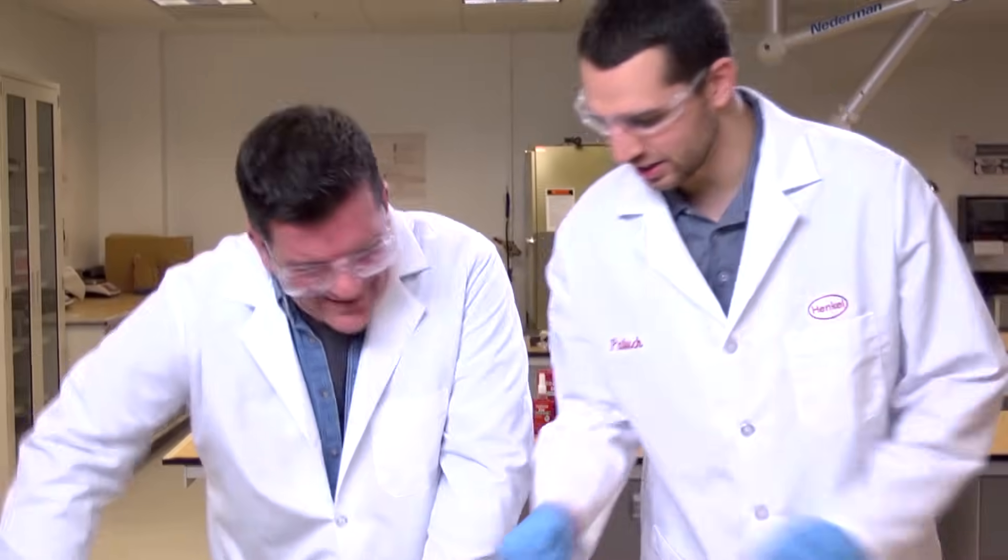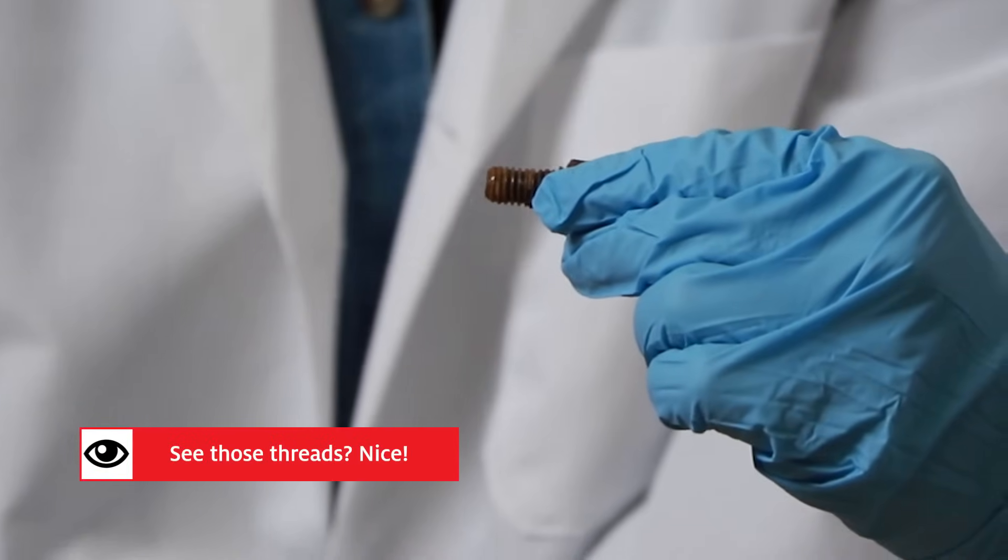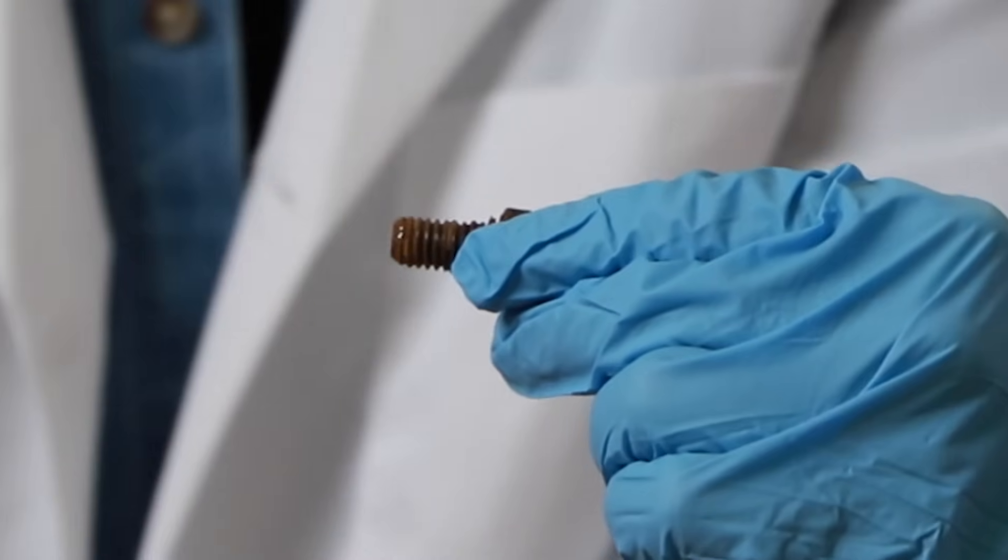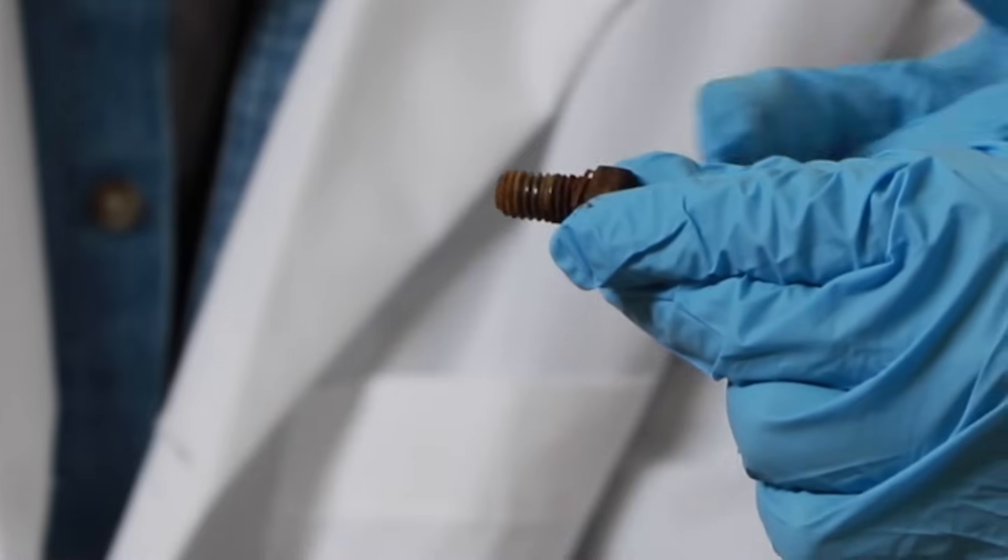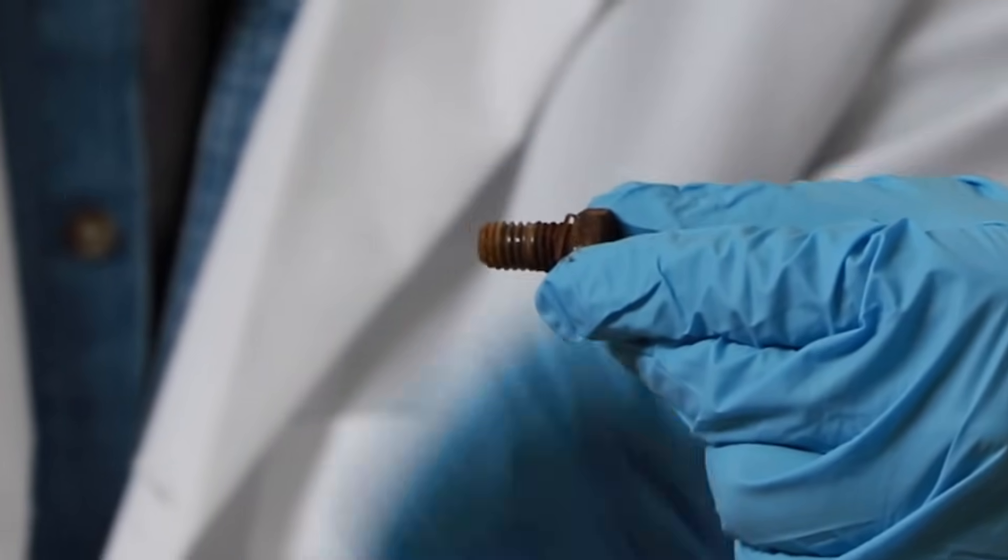And then what you can see here is that that product prevented any corrosion from happening in that engagement area. So you can see how it still looks like steel and there is no corroded rust as you see the rest of that. There's absolutely no rust where that thread locker was. Yep. So any place that you use thread locker, it's going to prevent any kind of rust or other corrosion from creeping up or creeping into your assembly. Wow. That's awesome. That's awesome.